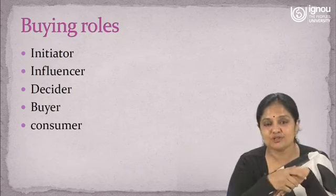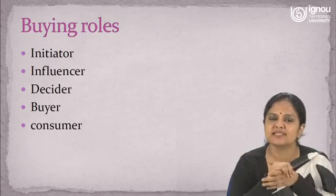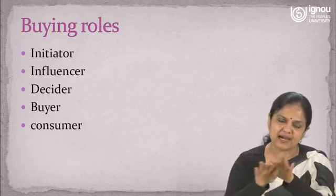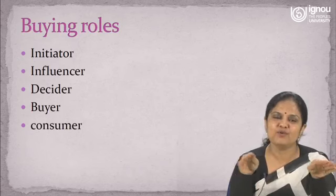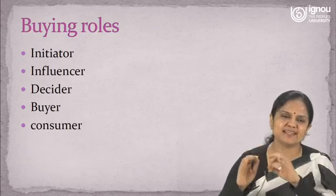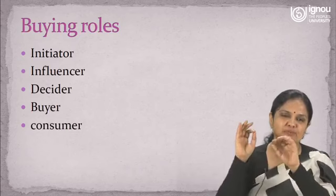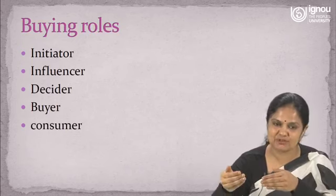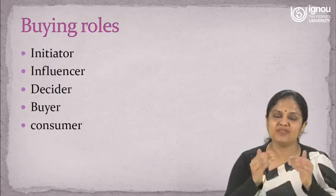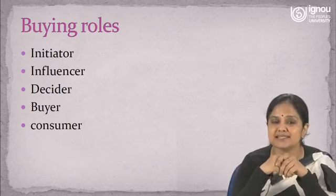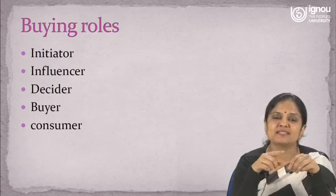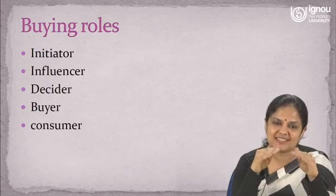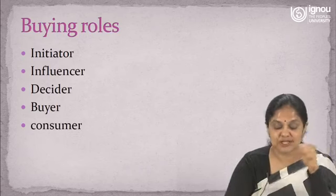Your spouse or kids may influence you, and then the decider decides. You sit together in the family and decide what to buy, which car, what the budget should be, and you also discuss it with friends or colleagues — and then the buyer actually buys. Once you buy and start consuming, you become the consumer, and the real picture comes — you realize as a consumer whether the commodity is actually satisfying your need or not.